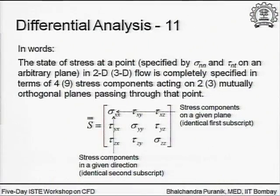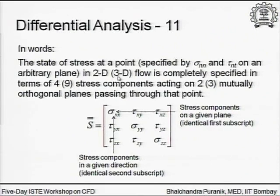In the same sense, the state of stress at a point is specified by sigma_nn and tau_nt — a pair of normal stress and shear stress acting on an arbitrary plane. In 2D, flow is completely specified in terms of four stress components acting on two mutually orthogonal planes passing through that point; in 3D, nine stress components on three mutually perpendicular planes.